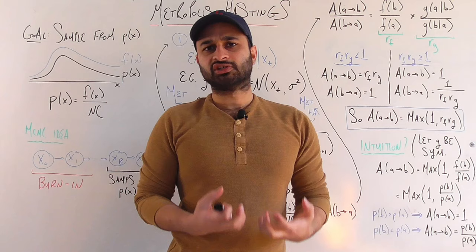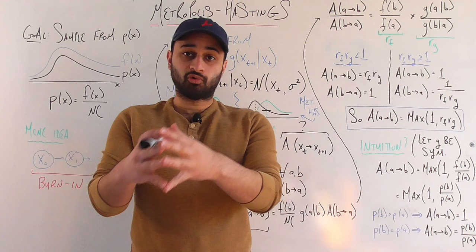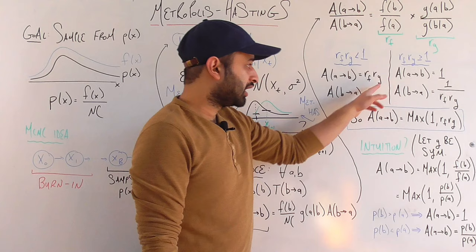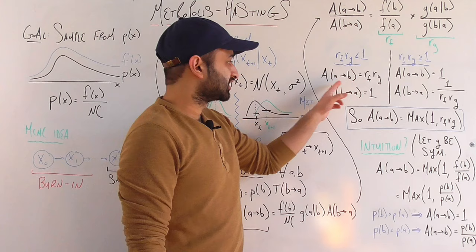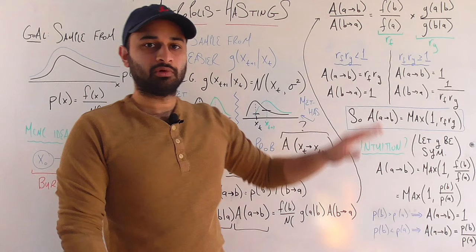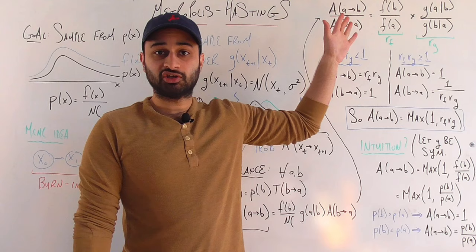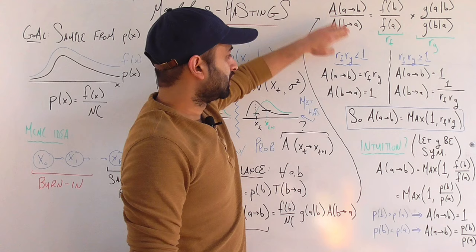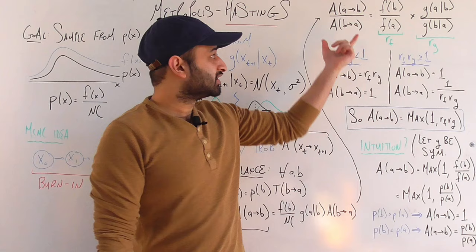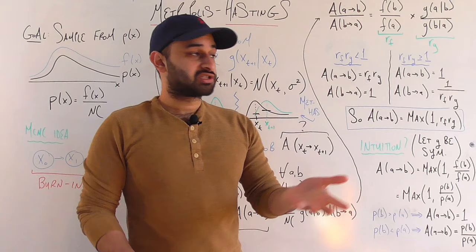Metropolis-Hastings defines the acceptance probabilities as follows. If r_f · r_g is less than 1, then a(a→b) = r_f · r_g and a(b→a) = 1. This is valid since r_f · r_g is bounded between 0 and 1 in this case. Checking detailed balance: the ratio a(a→b)/a(b→a) = (r_f · r_g)/1 = r_f · r_g, which equals the right-hand side by definition. So detailed balance is satisfied.